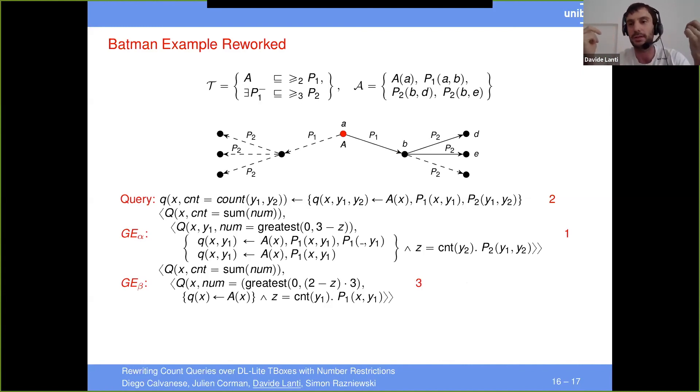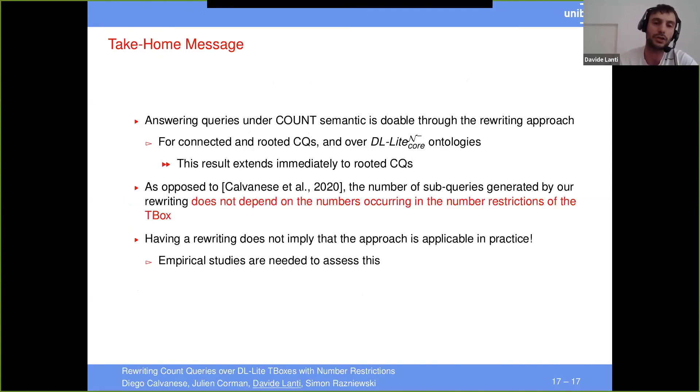So this means that this new rewriting now does, the size of the rewriting does not depend on the numbers encoded in number restrictions. And this is nice because if the number restrictions are encoded in binary, then this means that the prior algorithm would be exponential in the size of the number restrictions in the T-box. And since these number restrictions might encode quantities that are actually over the data, it will not be a very practical result because they could be really huge in practice. So what the conclusion is that answering count queries is doable through the rewriting approach for connected rooted CQs over the DL-Lite core and minus ontology. This result can be extended to rooted CQs also disconnected by doing the Cartesian product essentially of the answers. And as opposed to Calvanese et al., our rewriting does not depend on the numbers occurring in the number restrictions in the T-box.